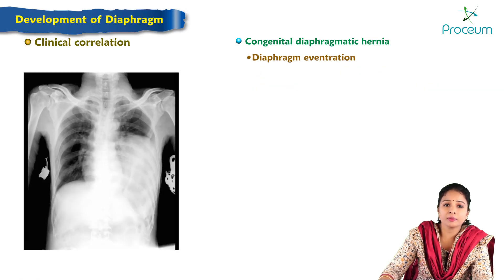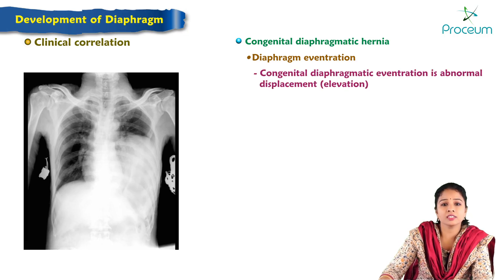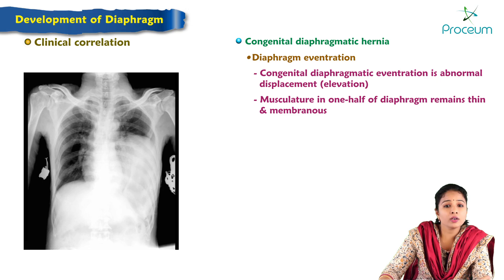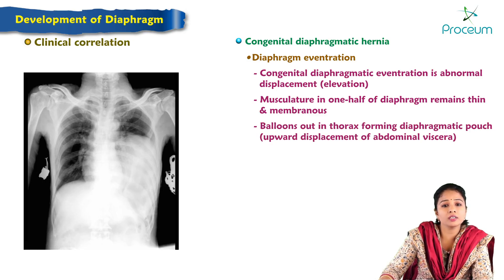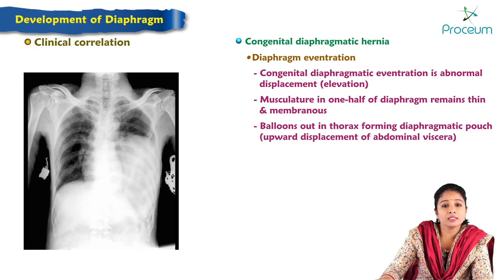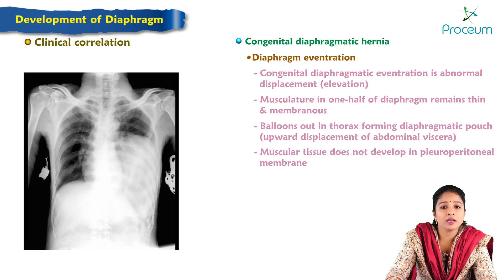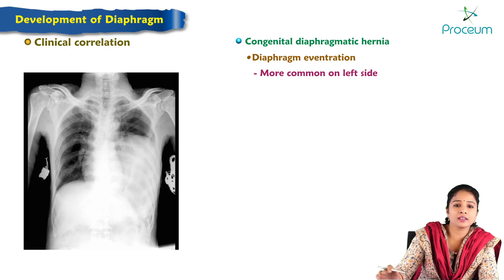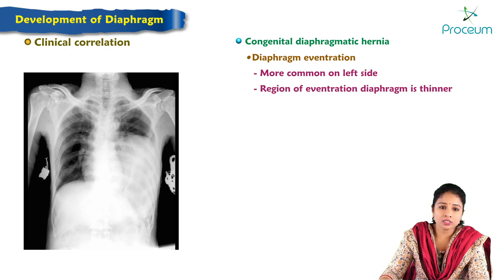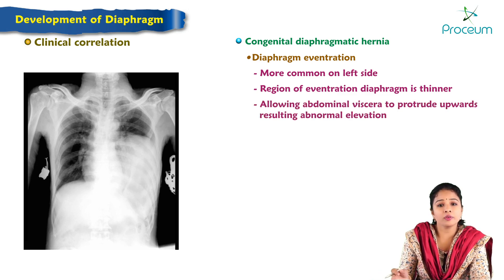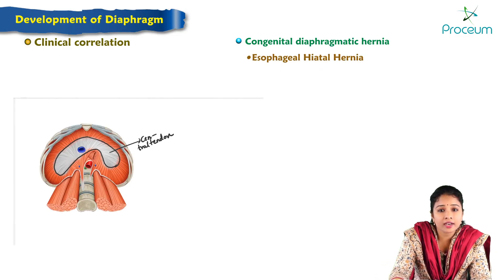The last variety is diaphragmatic eventration. Congenital diaphragmatic eventration is the abnormal displacement or abnormal elevation of the diaphragm. In this condition, the musculature of one half of the diaphragm remains thin and membranous, and it balloons out into the thorax forming a diaphragmatic pouch due to upward displacement of abdominal viscera. This anomaly occurs when muscle does not develop in the pleuroperitoneal membrane. It is more common on the left side, as the diaphragm becomes thinner, allowing abdominal viscera to protrude upwards.